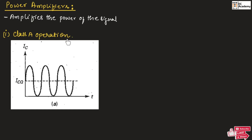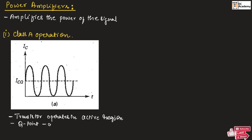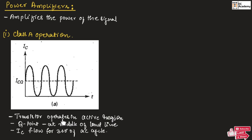Let us understand class A operation of a power amplifier. This is the output current for class A operation. In class A operation, the transistor operates in the active region, which means the Q point or operating point of the transistor will be at the middle of the load line, and the collector current will flow for 360 degrees of the input cycle. Hence, we will get the complete output current waveform.